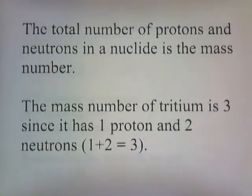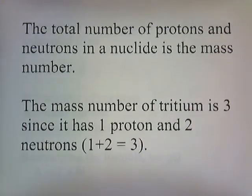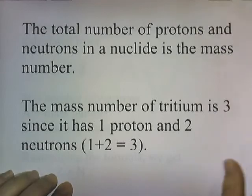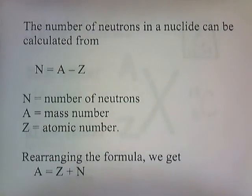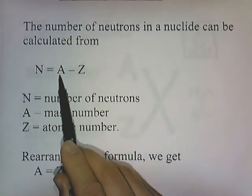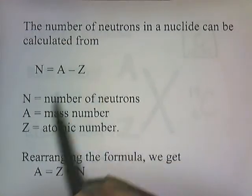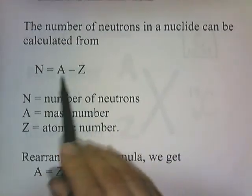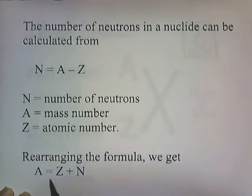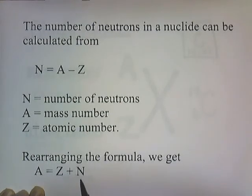The total number of protons and neutrons in a nuclide is the mass number. The mass number of tritium is three, since it has one proton and two neutrons — one plus two is three. The number of neutrons in a nuclide can be calculated from n = A − Z: mass number minus atomic number. If you rearrange, A = Z + n, where Z is protons and n is neutrons.